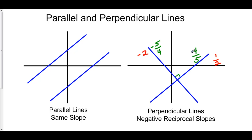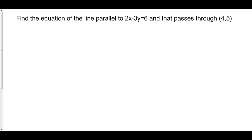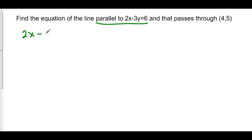So that's how you find the slopes of perpendicular lines. Now, find the equation of the line parallel to two x minus three y equals six, and that passes through four comma five. Well, if it's parallel to this line, then these lines have the same slope. So we have to find the slope of this line right here. To do that, we will turn this standard form line into slope-intercept.